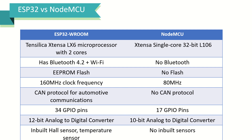CAN protocol is supported with ESP32 but not with NodeMCU. ESP32 has 34 GPIO pins while NodeMCU has only 17. ESP32 features a 12-bit ADC compared to a 10-bit ADC on NodeMCU. Inbuilt hall effect and temperature sensors are available with ESP32, whereas no inbuilt sensors are available with NodeMCU.